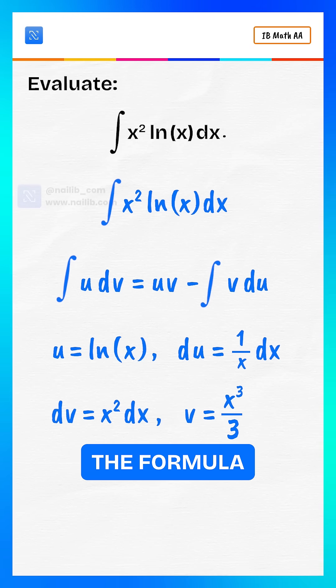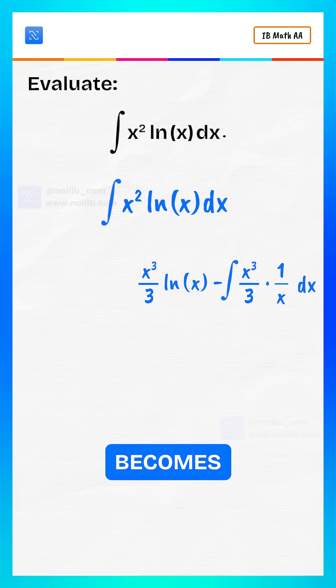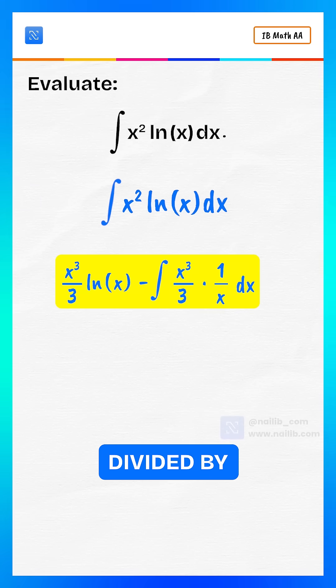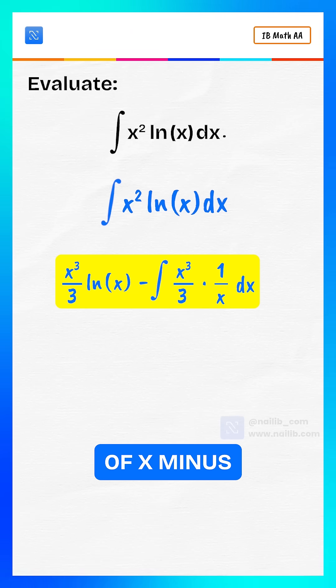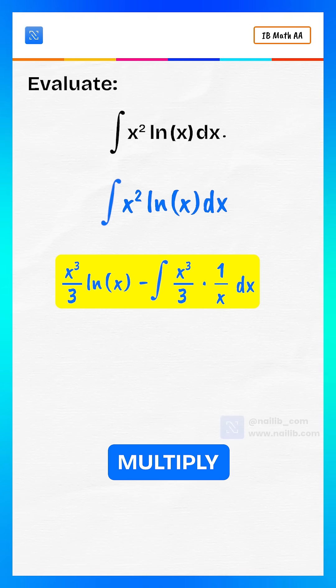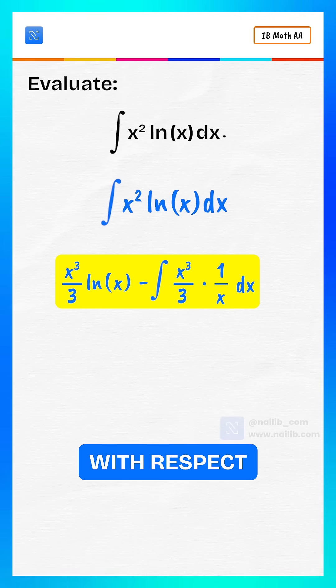Now apply the formula. Integral becomes x cubed divided by 3 multiply by log of x minus integral of x cubed divided by 3 multiply by 1 over x with respect to x.